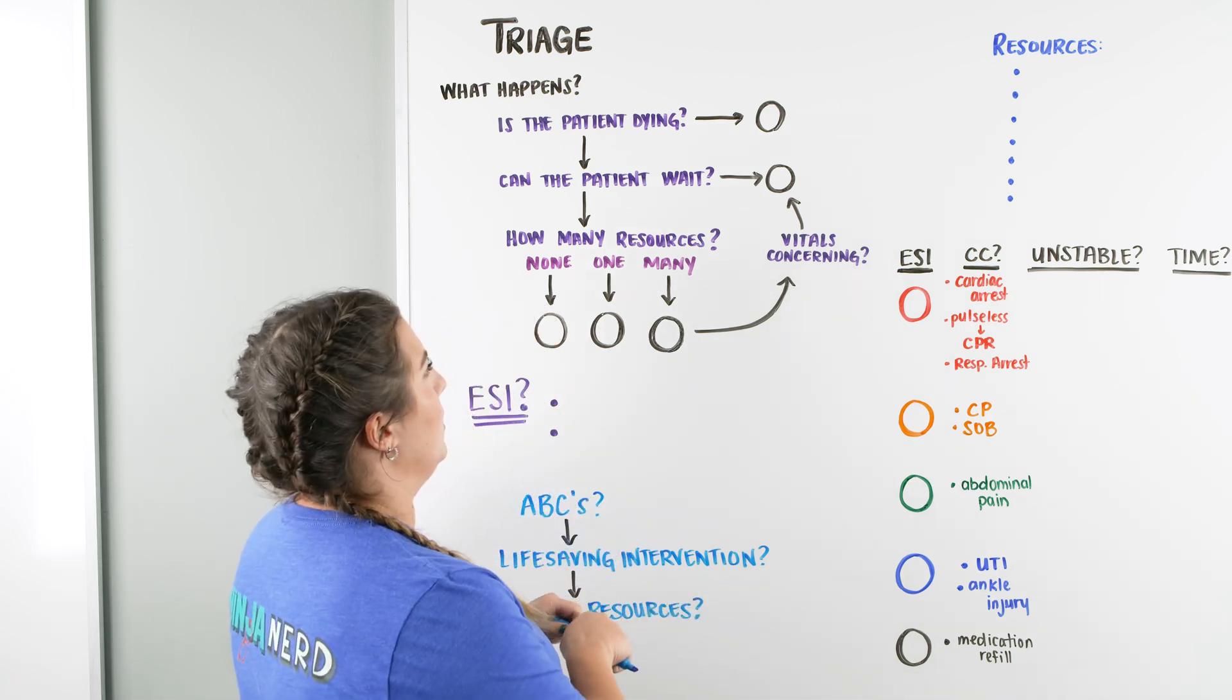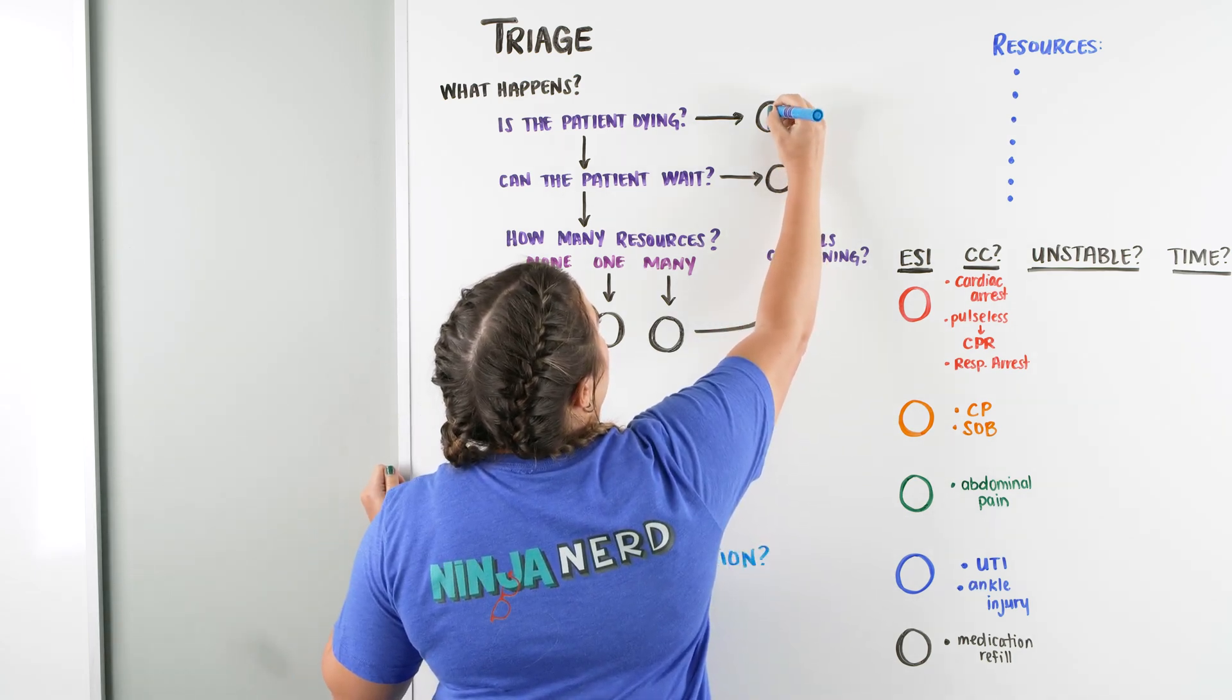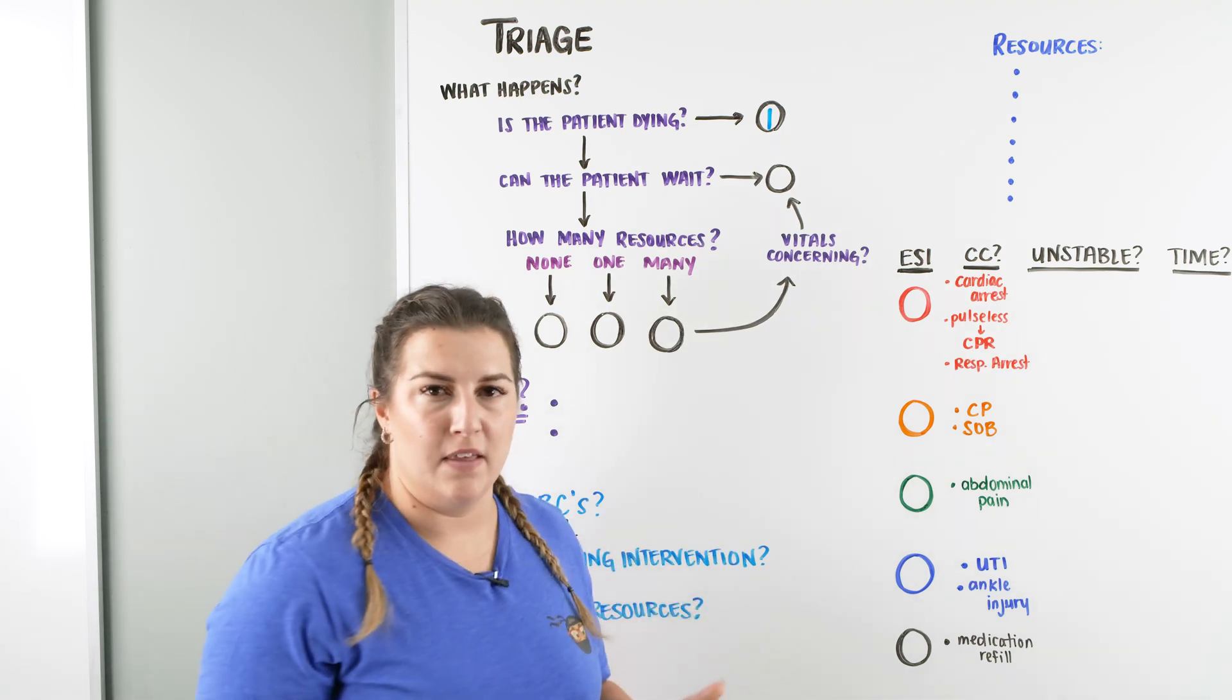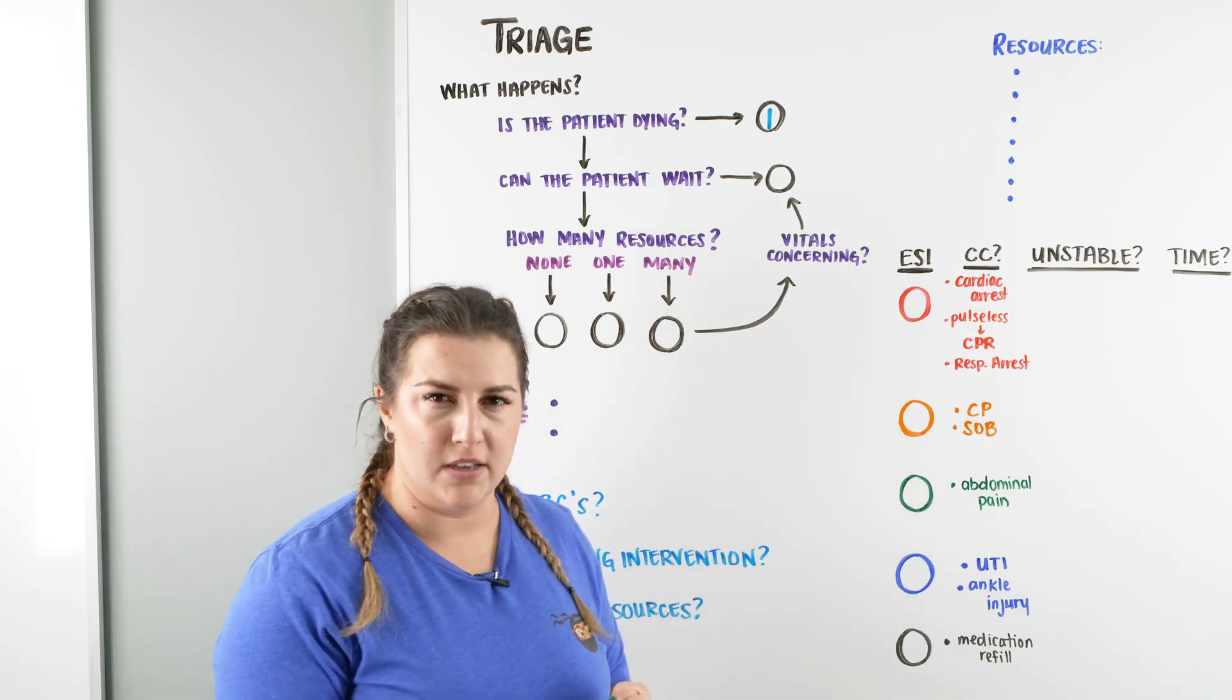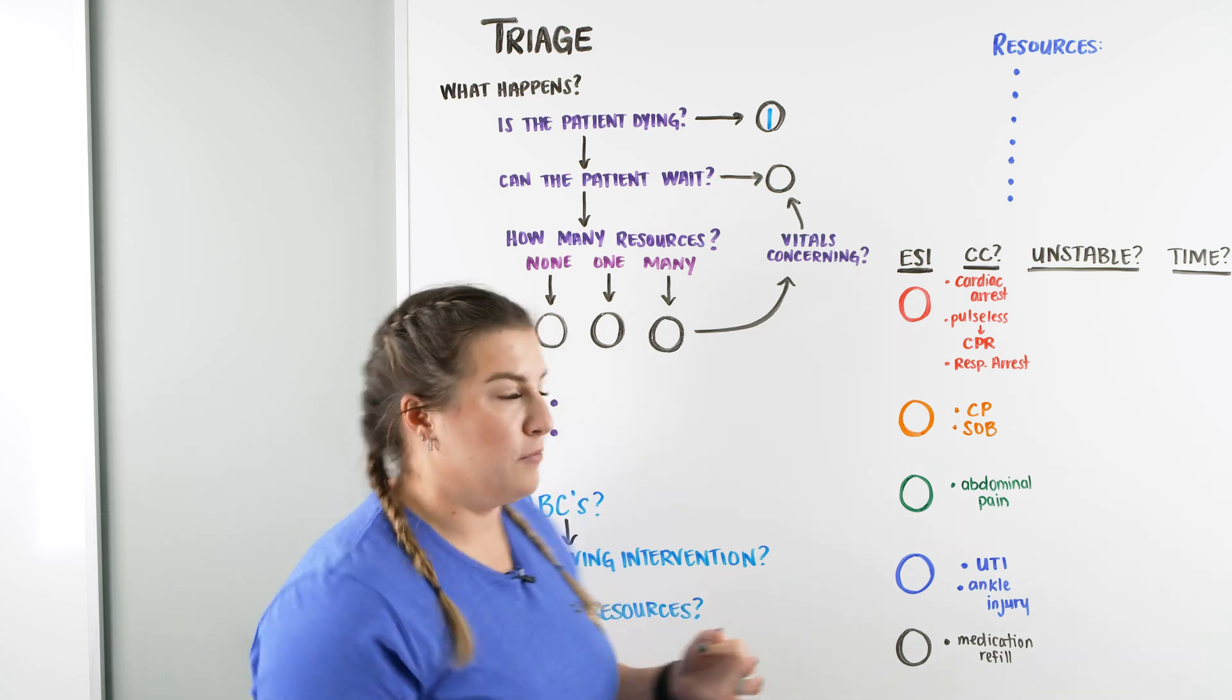If they are dying, then we are going to be giving them an acuity of one. And we're going to get into what all these numbers mean. But if the patient's dying, that means we're going to be looking at things like cardiac arrest, respiratory arrest, or something else that is going on where the patient is actively dying.